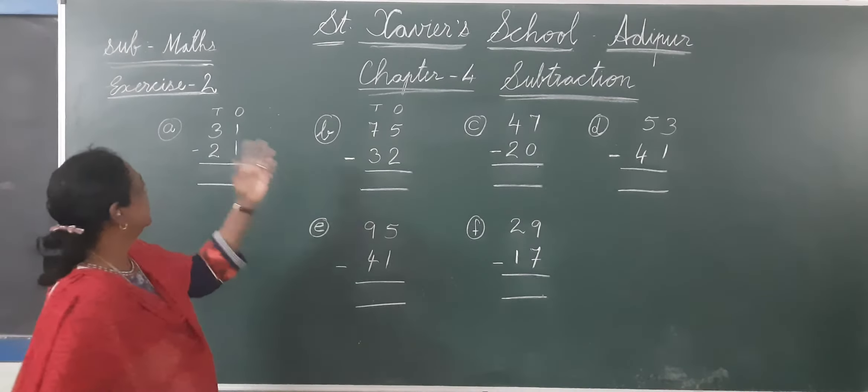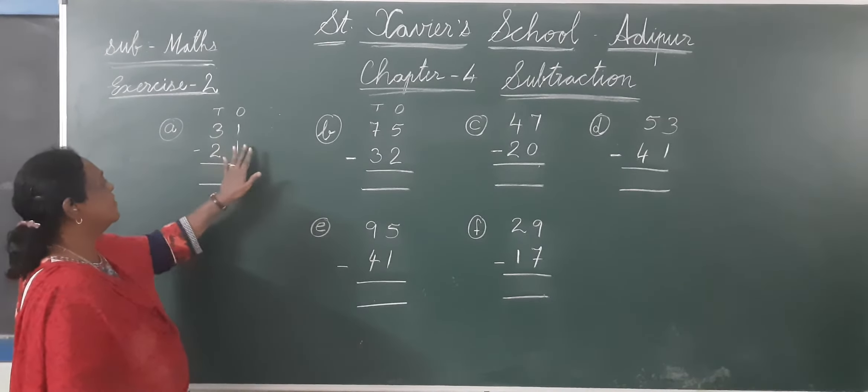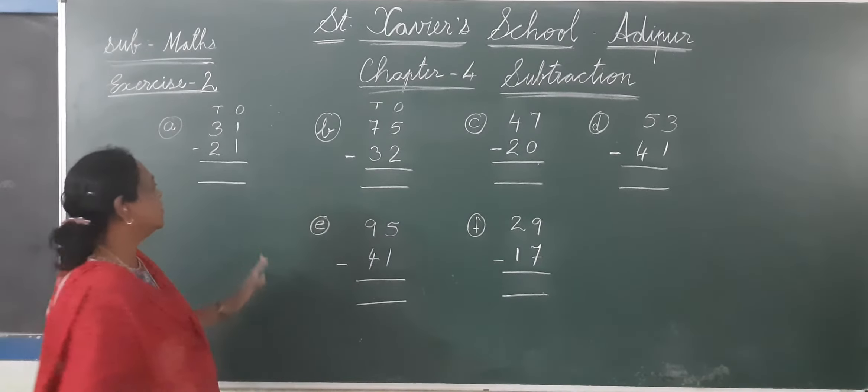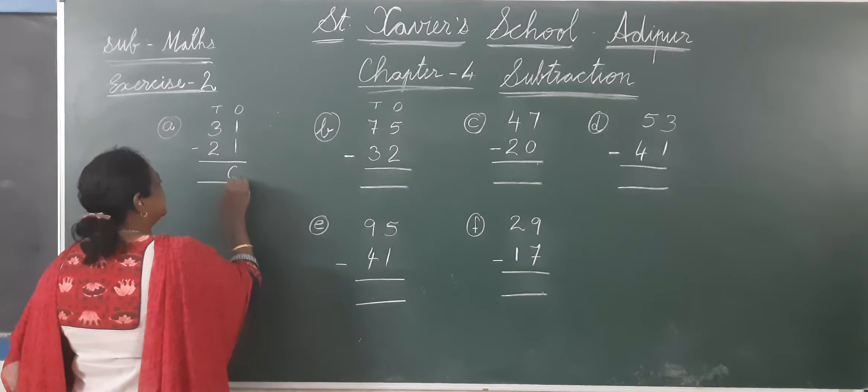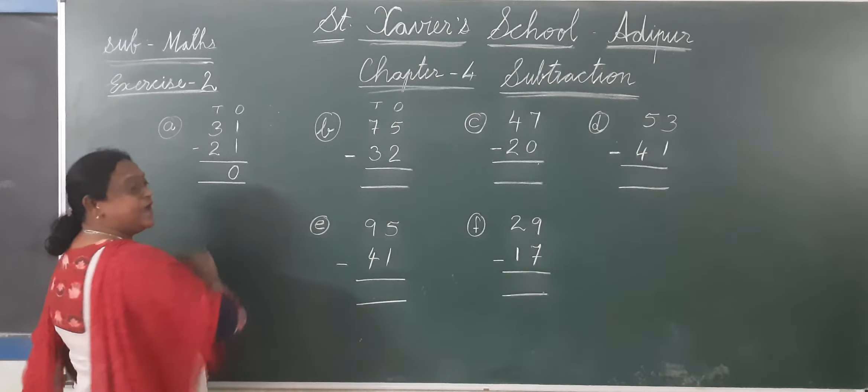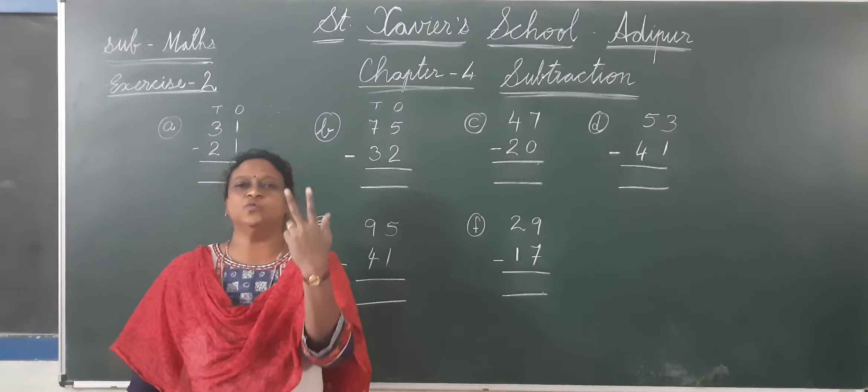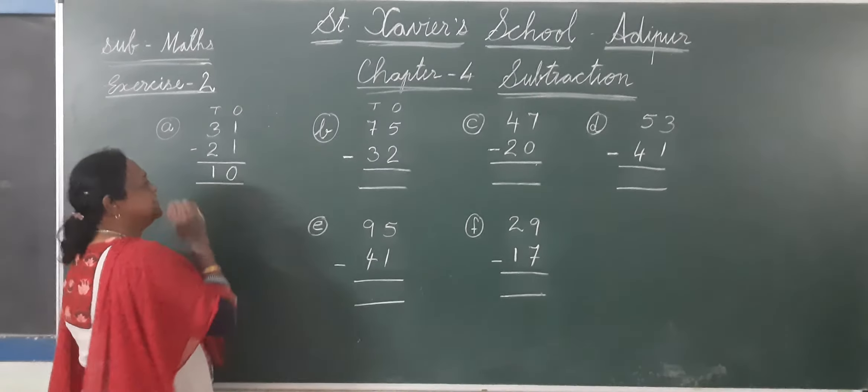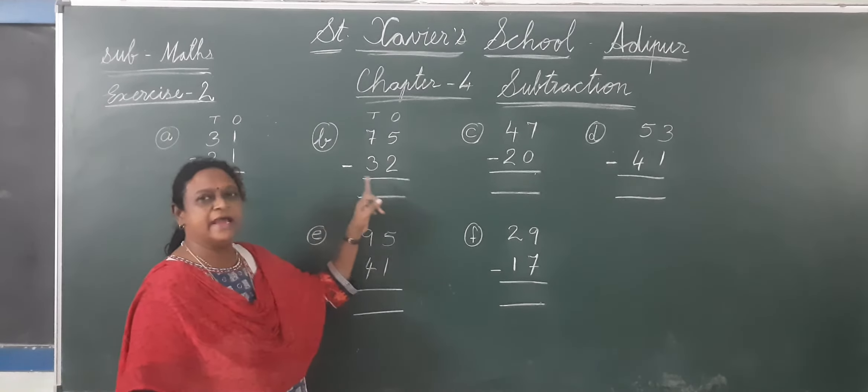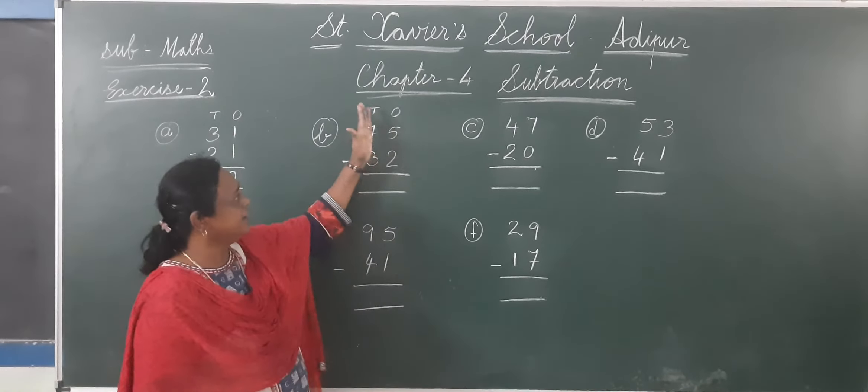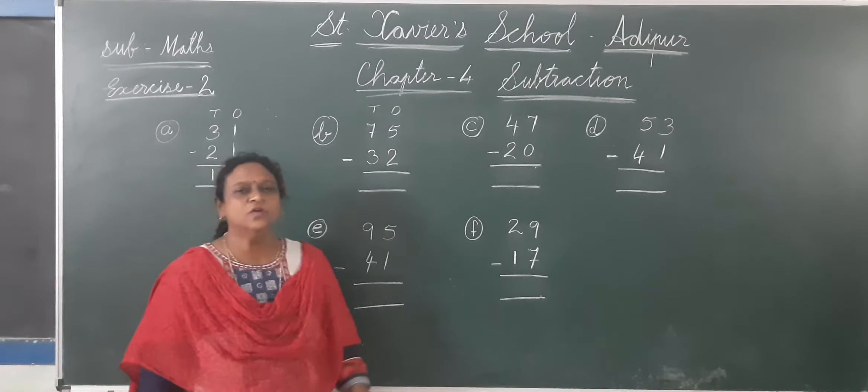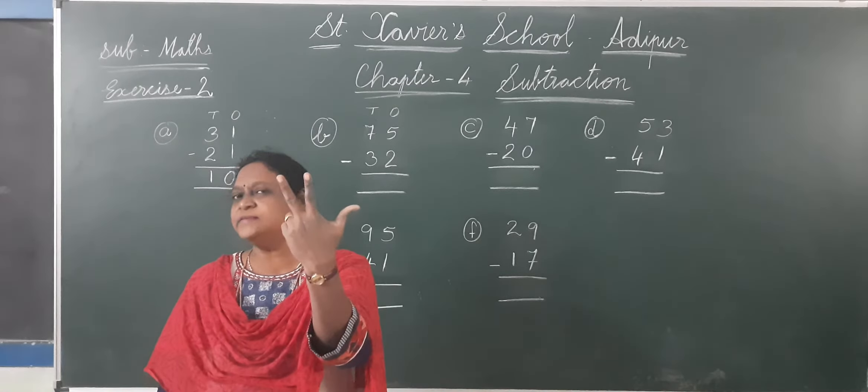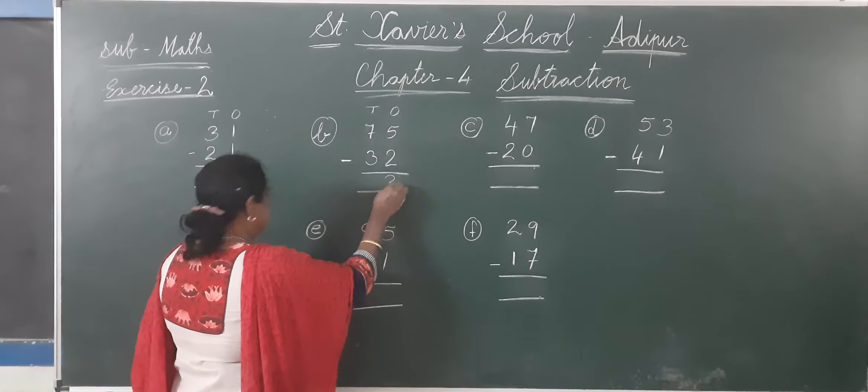Now we will do Exercise number 2. Chapter number 2, exercise number. Here we have 31 minus 21. 1 minus 1 is 0. Ek chocolate hamare paas hai hum ne kha liya, kya bacha? 0. 3 minus 2 is 3 fingers. Then 2, 1, 2 minus kar diya. How many remaining? 1. Right answer 1. 75 minus 32. 5 minus 2, 5 fingers minus 2 finger, 1, 2. Remaining is 3.